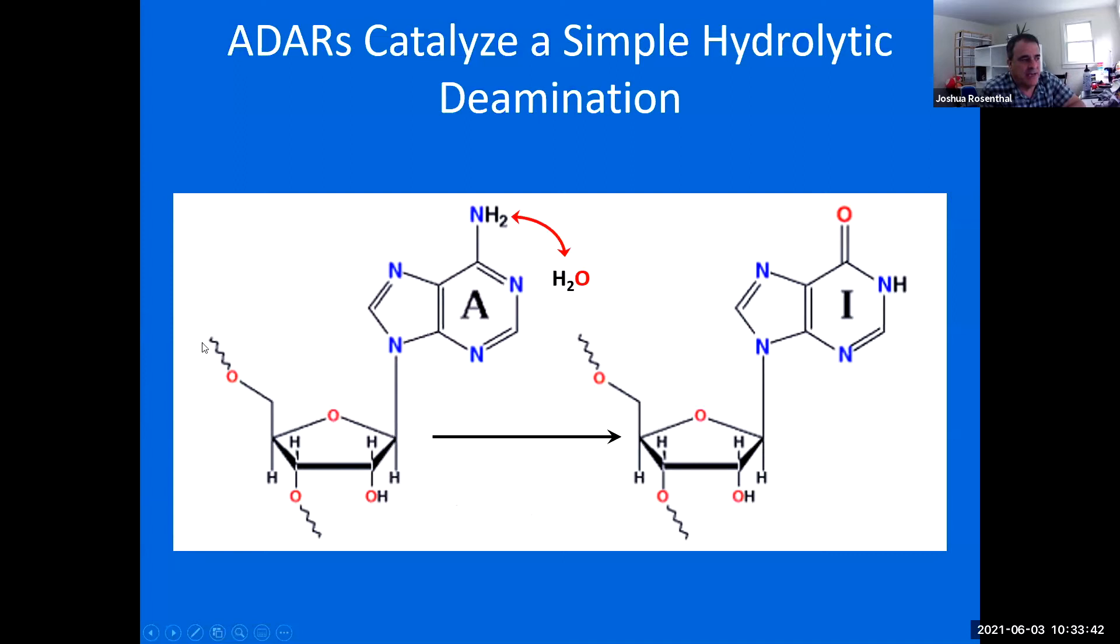If you zoom in on this reaction here, we have the messenger RNA with the adenosine here at the number six position. We have a primary amine where ADAR catalyzes a hydrolytic deamination to a carbonyl oxygen. So it's a relatively simple reaction. It's just a simple deamination of this position.